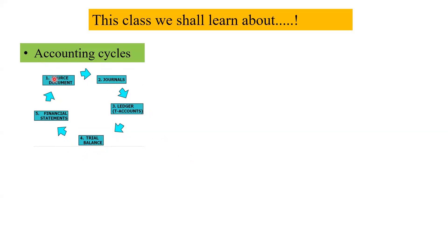Each step — step one through step five — we are going to utilize all the data collected from the evidence stage to the financial statement stage. The financial statement shows whether the company is under profit, and if so, how much profit. You may have heard in the news that Wipro or Infosys made 30% profit this year compared to last year — everything comes from financial statements. So from source document to financial statement, you should learn everything.